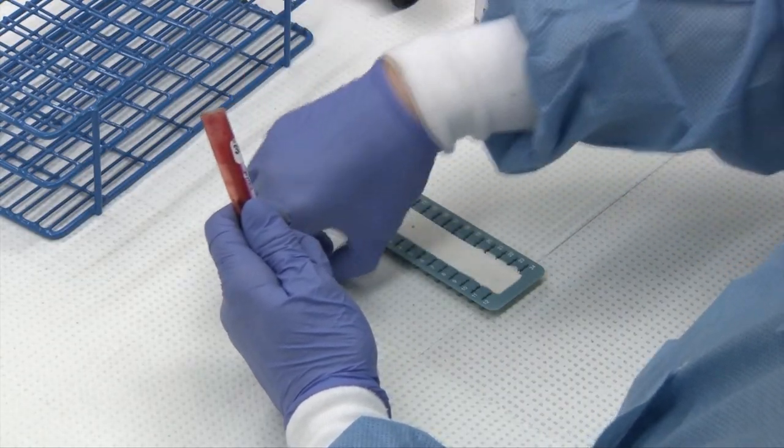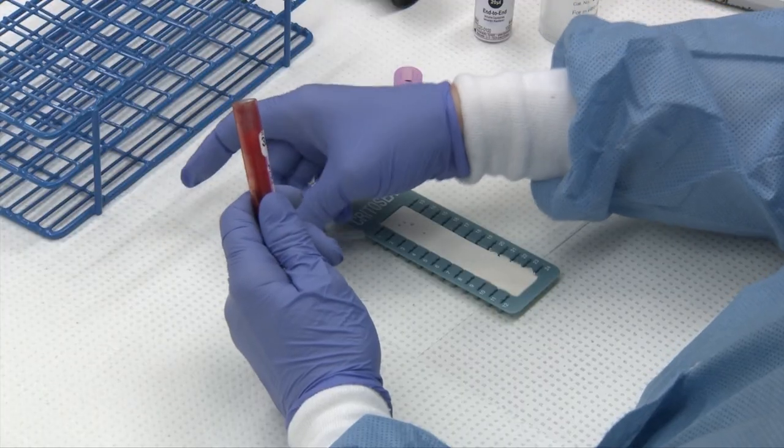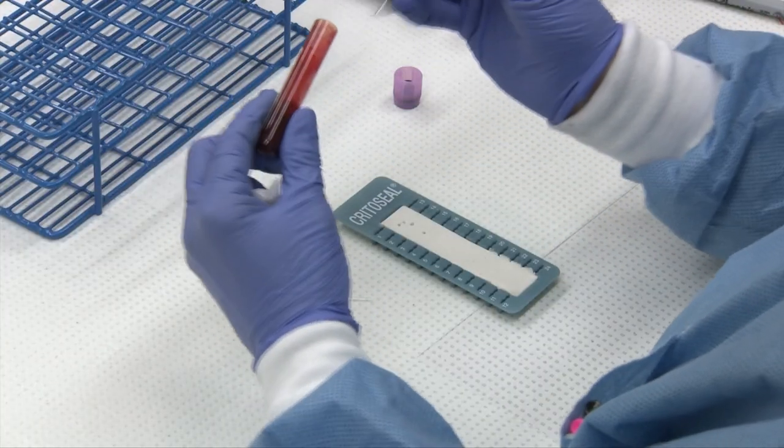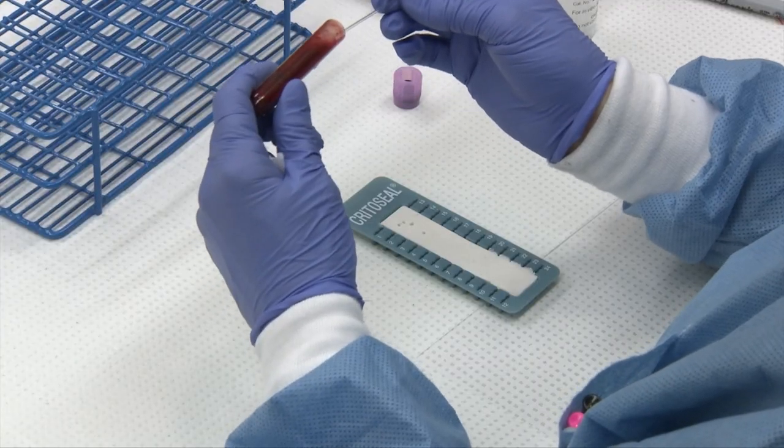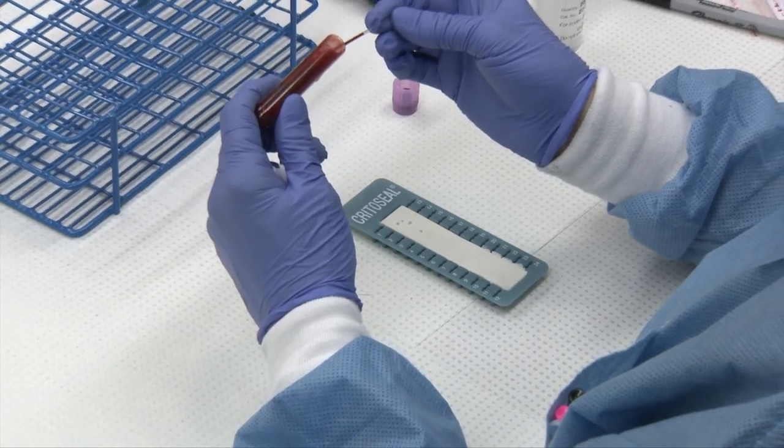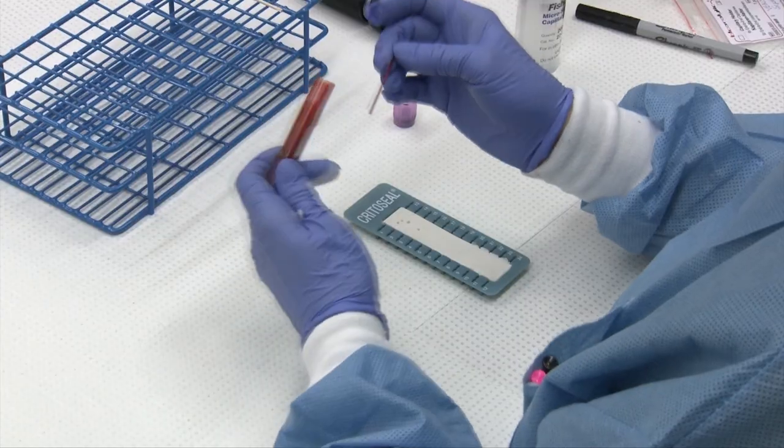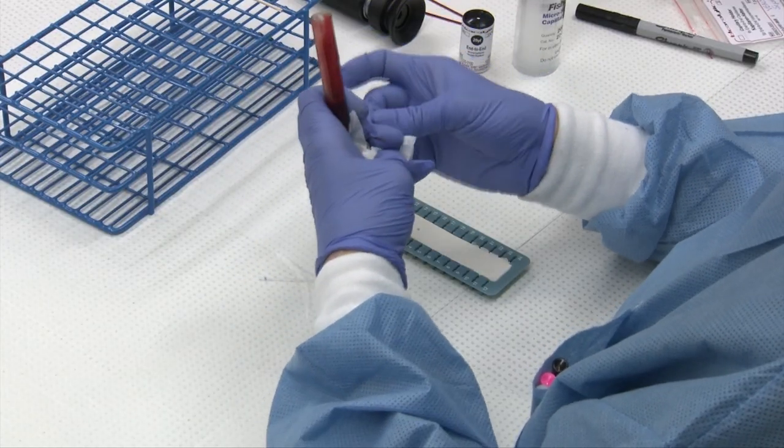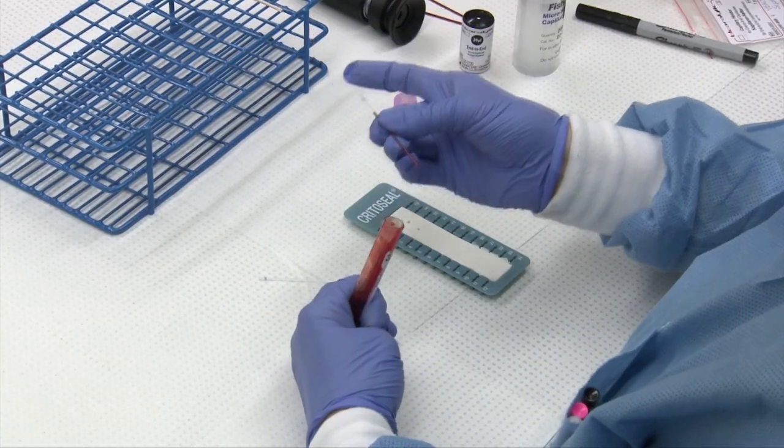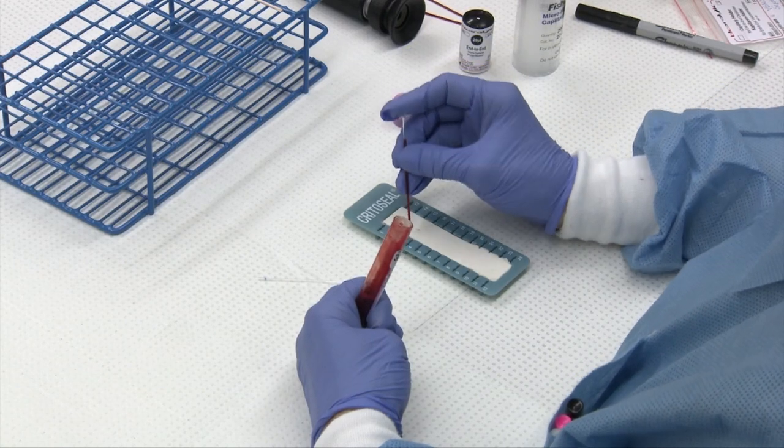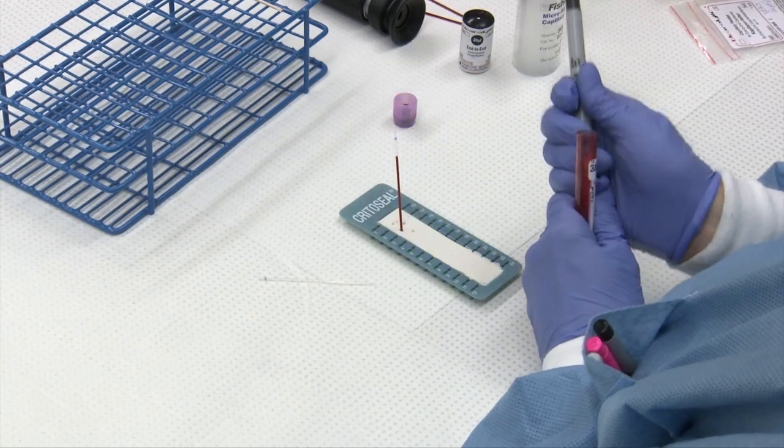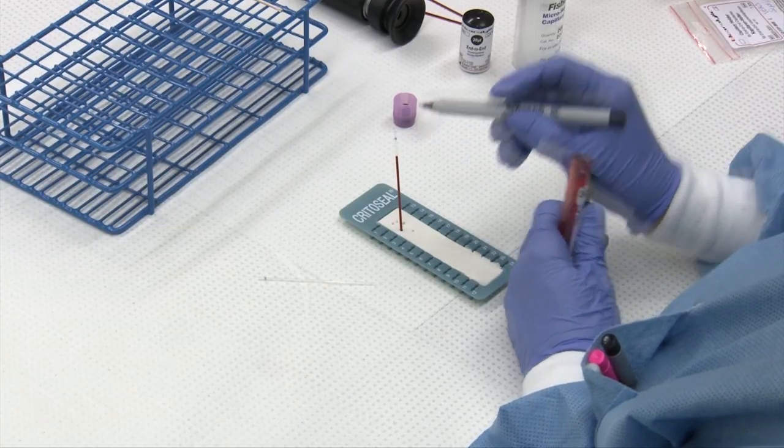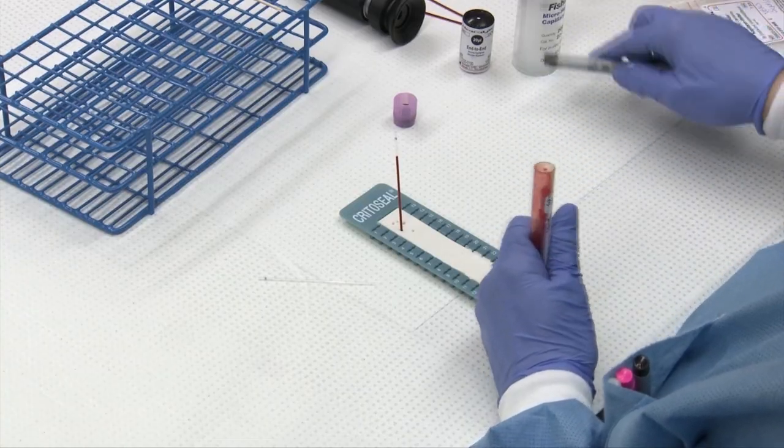Fill two PCV tubes about three-quarters full. If you're having trouble filling your tube, let gravity be your friend. There is no right or wrong end to these tubes even though one is marked with a blue line. I recommend not filling your tube right to that blue line because it makes it more difficult to read your PCV.